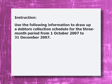Now let's look at how to complete the debtors collection schedule, just to refresh your minds. What is it all about? When you sell to debtors on credit, how will you receive that money? You don't sell to them this month and expect the whole amount next month — it doesn't always work that way. Use the following information to draw up a debtors collection schedule for the three-month period from the 1st of October to the 31st of December. You need to find your credit sales.